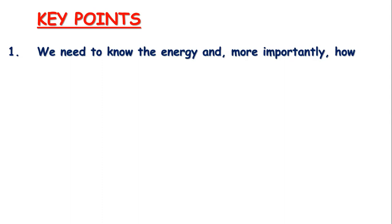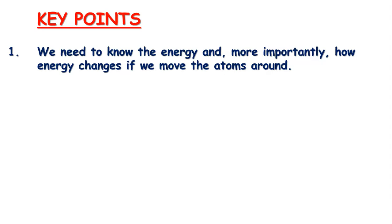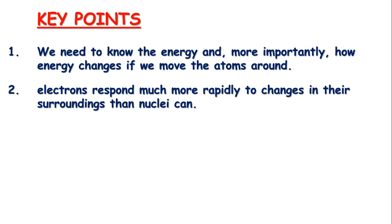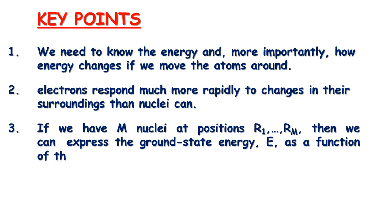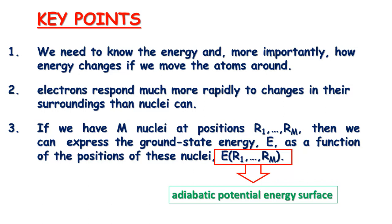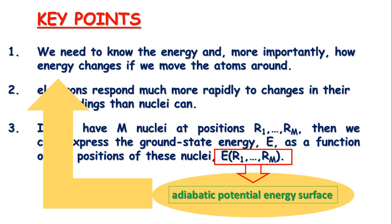There are some key points to remember. From the Schrödinger equation, what we need to know is precisely the energy, and more importantly, how the energy changes if we move the atoms around. Nuclei are much much heavier than electrons, so electrons respond much more rapidly to changes in their surroundings than the nuclei can. Since positions of nuclei are fixed, if we have m nuclei at positions r1 ... rm, we can express the ground state energy E as a function of the nuclear positions: E(r1 ... rm). This quantity is called the adiabatic potential energy surface, which is the ground state energy. By knowing the adiabatic potential energy surface, we can tackle the original problem.